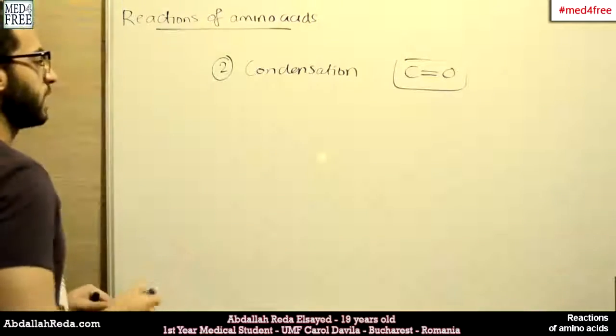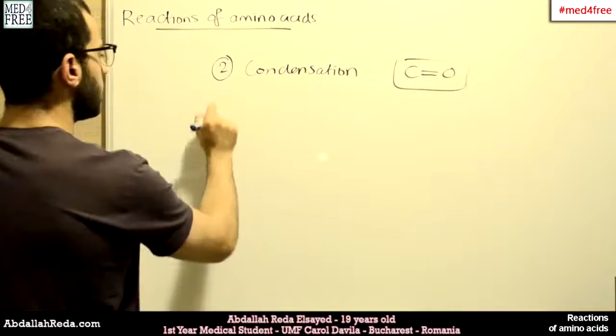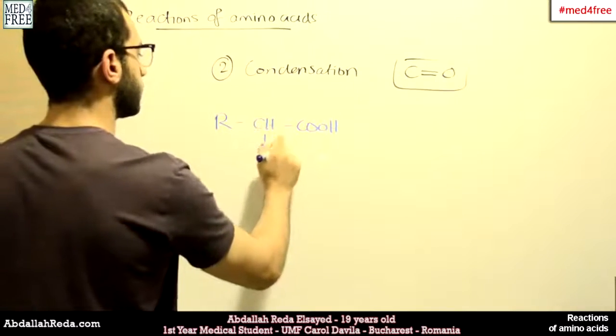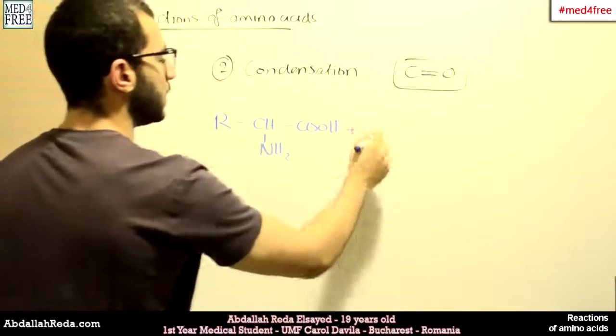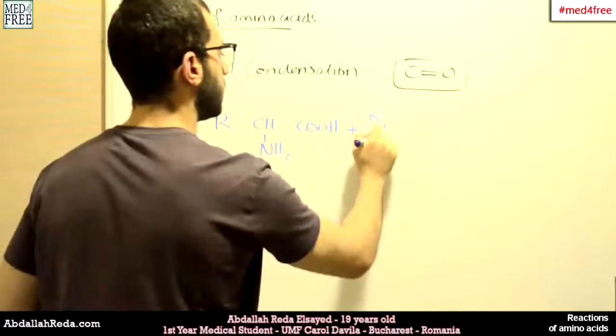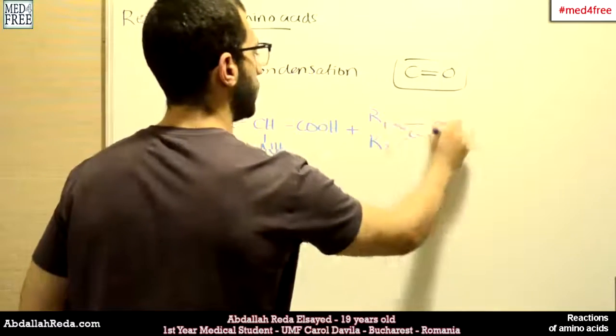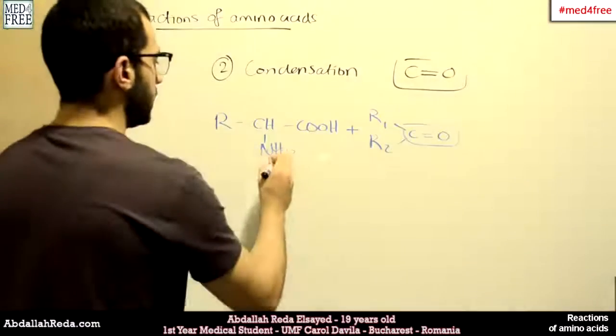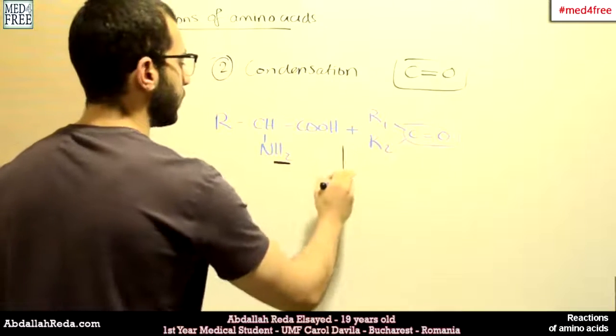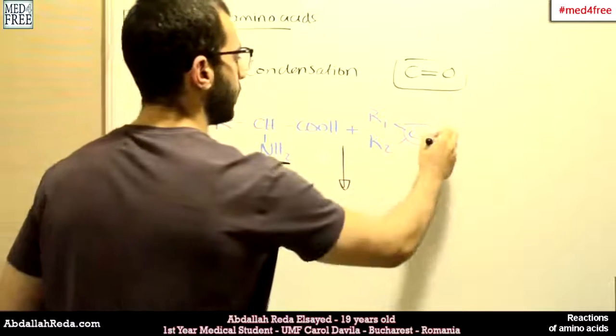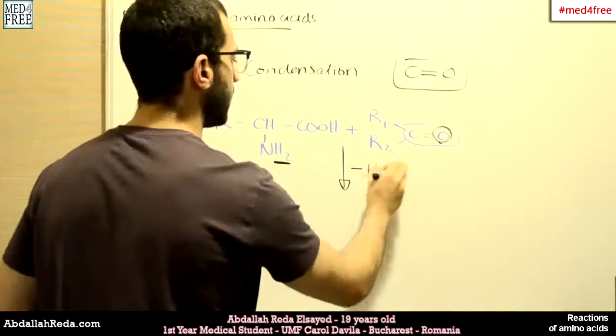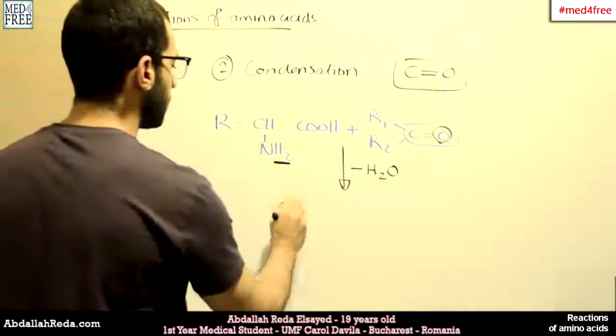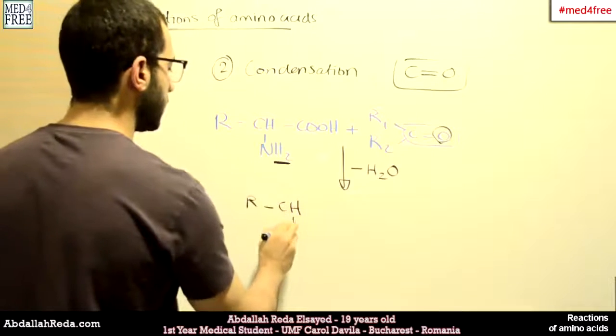So for example, this is the amino acid. And this is a molecule with a carbonyl group. What happens is the H2 here in the amino group will combine with this oxygen. So we will lose a water molecule and we get a new compound like this.